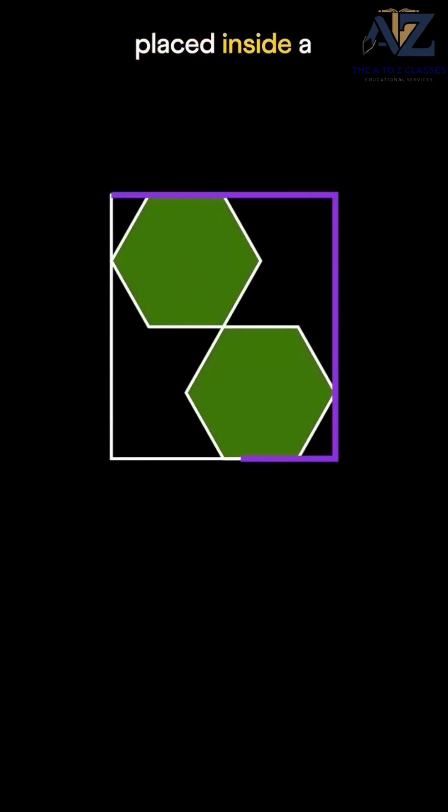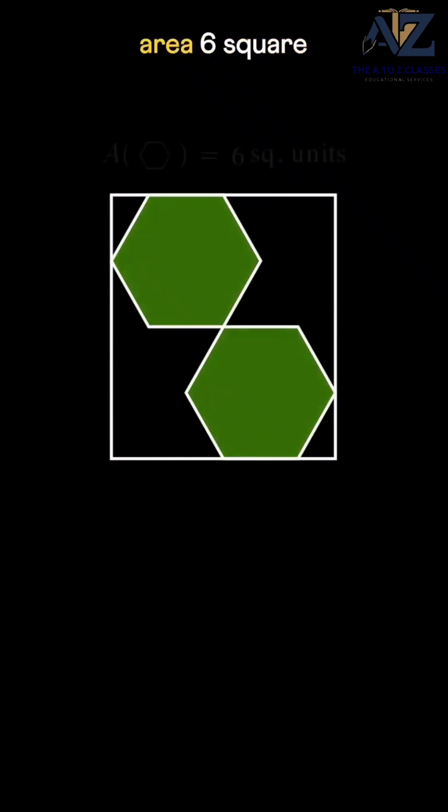Now if two regular hexagons placed inside a rectangle each have an area six square units, what's the shaded area? I'll see you later.